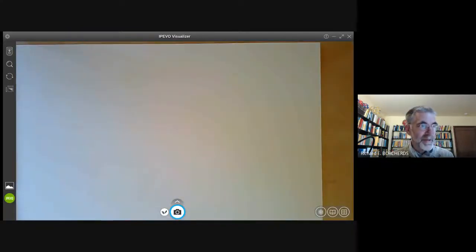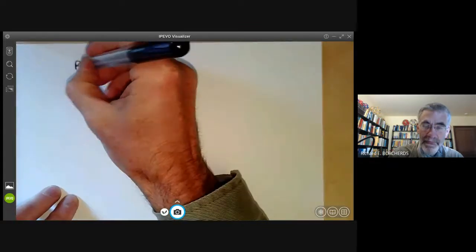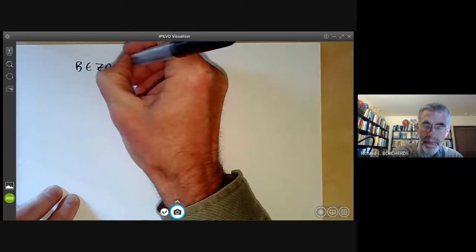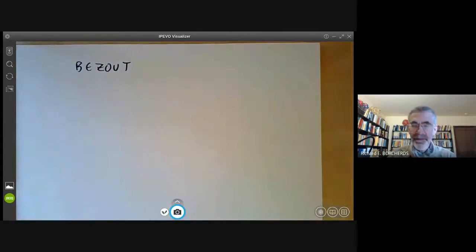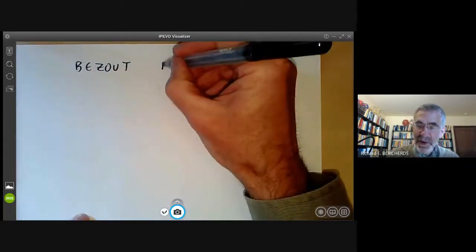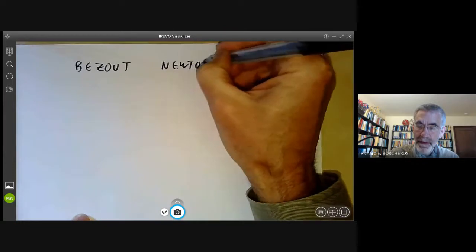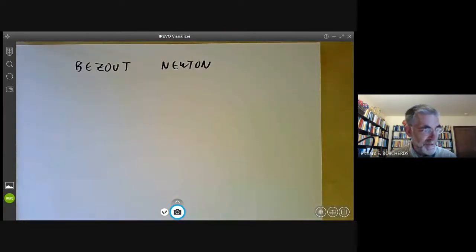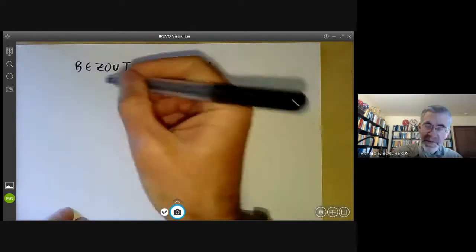So we start with the theorem of Bezout. In fact, this theorem was originally stated by Newton in his Principia. It's book one, section six, lemma 28, if you want to see it. Newton didn't really prove it, or at least his proof was kind of a bit informal and difficult to follow.